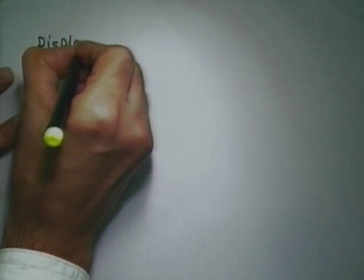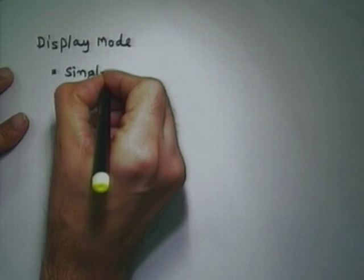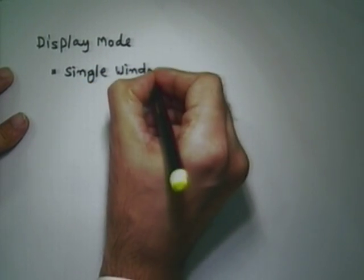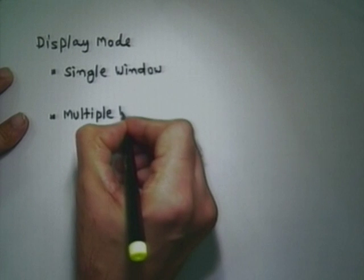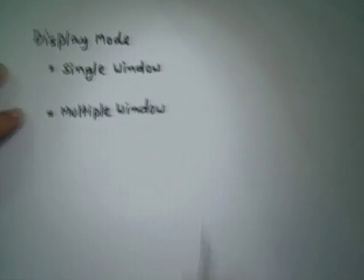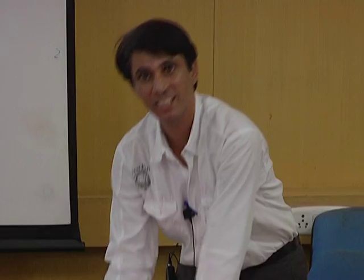There are two display modes in AView: single window and multiple window. In single window mode, you can see the video part, online users, and the document and whiteboard — four screens inside a single interface. This is the consolidated mode; we call it single window mode. When you choose single window, you will get this interface.